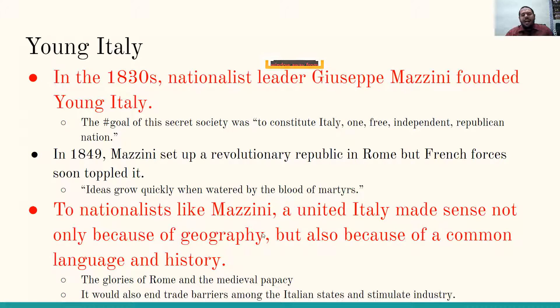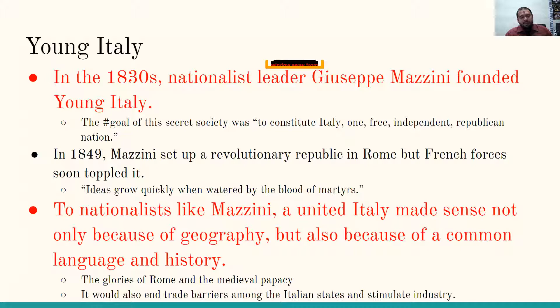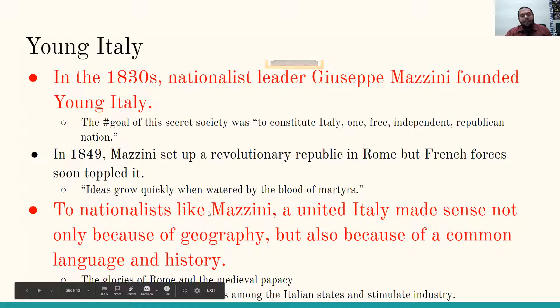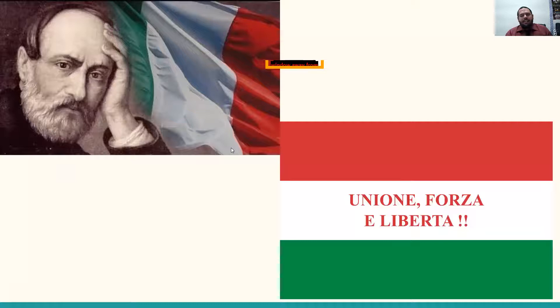To nationalists like Mazzini, a united Italy made sense not only because of geography, but also because of a common language and history — hello, Roman Empire, the most glorified empire in ancient history, where a lot of government styles are modeled after the Romans. Unification would also end trade barriers among the Italian states and stimulate industry, kind of like the Zollverein acted in Germany and Prussia.